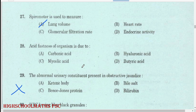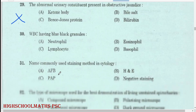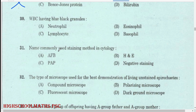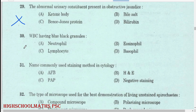Acid fastness of an organism is due to mycolic acid. The question is deleted. WBC having blue-black granules: basophil.